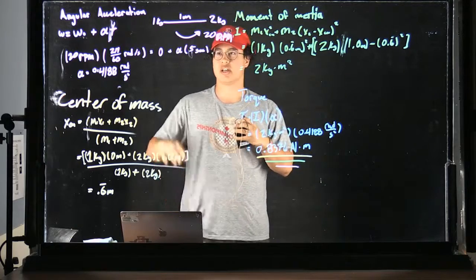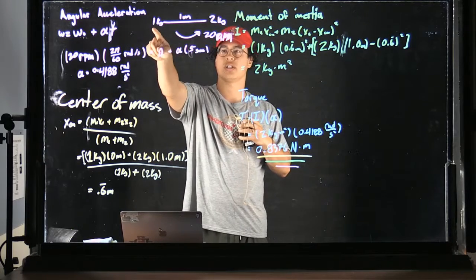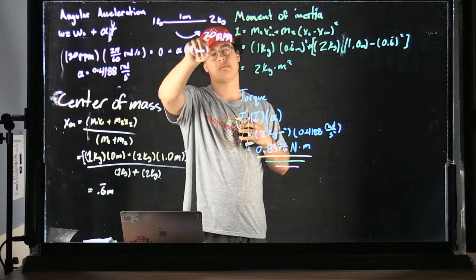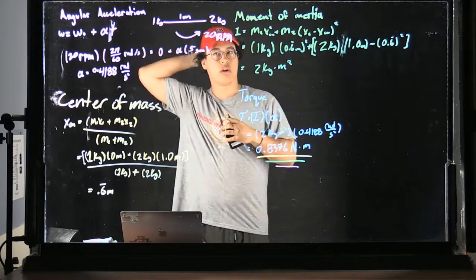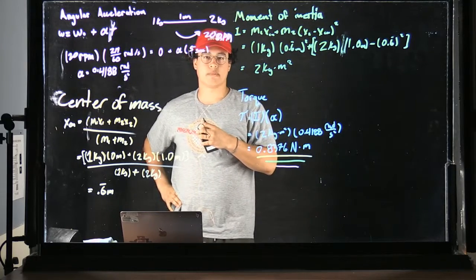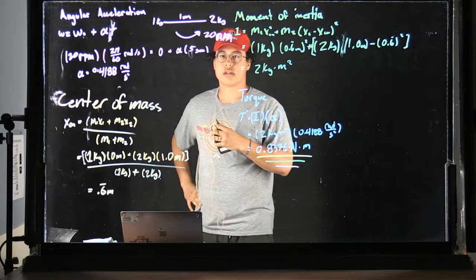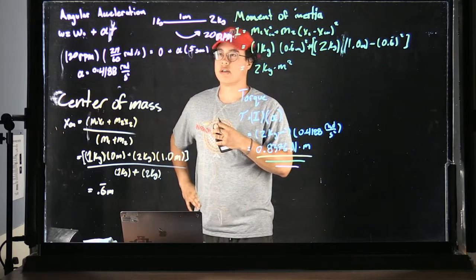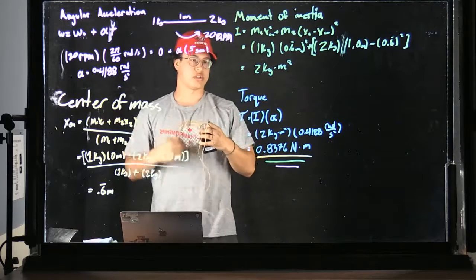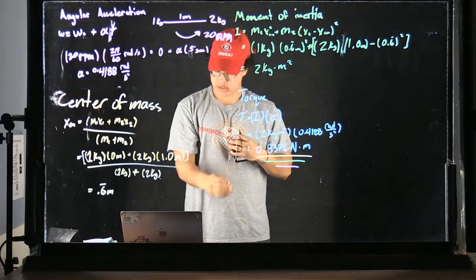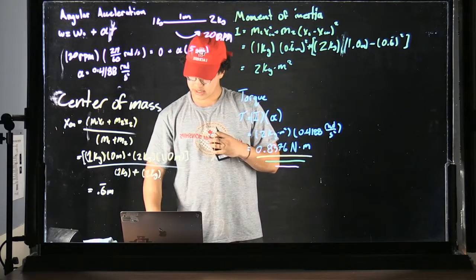So first, I'm just explaining the problem, talking about how there's two masses, two spheres with one with a mass of one kilogram, another with a mass of two kilograms, each at the end of a meter-long pole, and they are spinning counterclockwise at 20 RPMs.